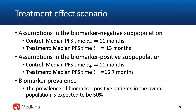Another important parameter of adaptive designs with population selection is the prevalence of biomarker positive patients. In this case, we assume that the prevalence is 50%. This assumption is typically based on relevant historical data and will determine the relative sizes of the biomarker positive and biomarker negative subsets. With a 50% prevalence, those two subsets are expected to be of the same size.